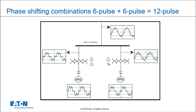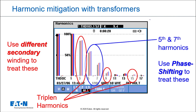Another really good way to use transformers to reduce harmonics is to use phase shifting. In this case, we use two 6-pulse drives and create a 12-pulse system, which is more of a system approach. We could also do a 24-pulse system with four transformers. A nice benefit of adding transformers to your system is to do phase shifting and cancellation.